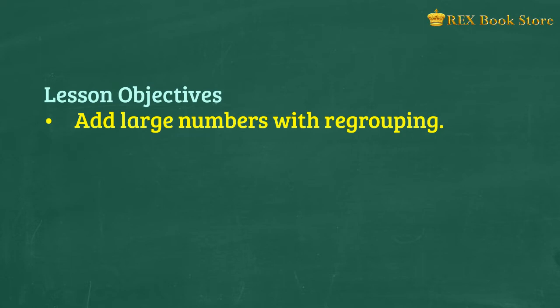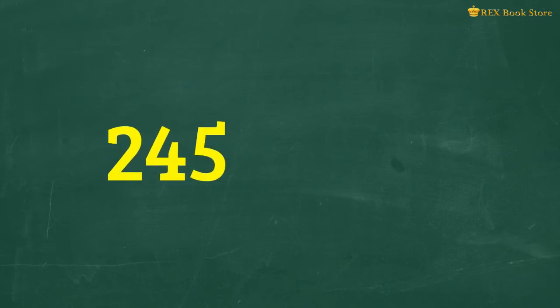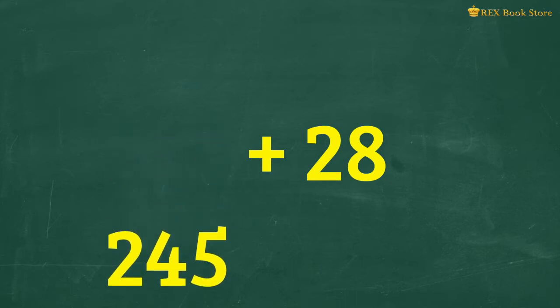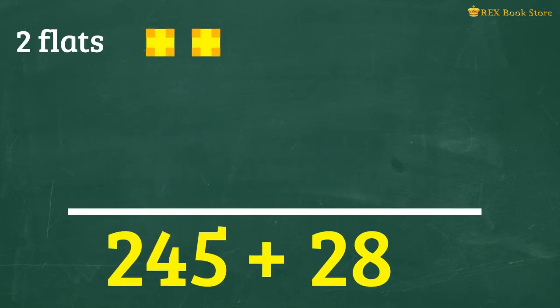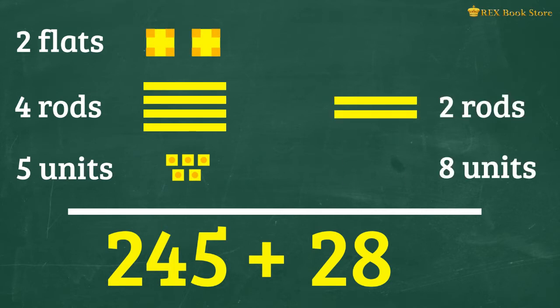Let's start off by adding these two numbers – 245 and 28. Using manipulatives, we model 245 with 2 flats, 4 rods, and 5 units. Then we model 28 with 2 rods and 8 units.